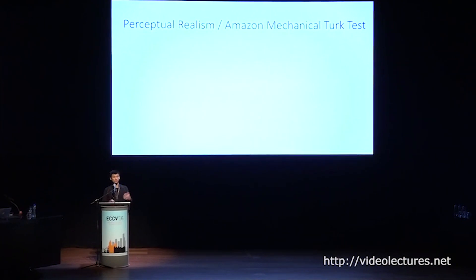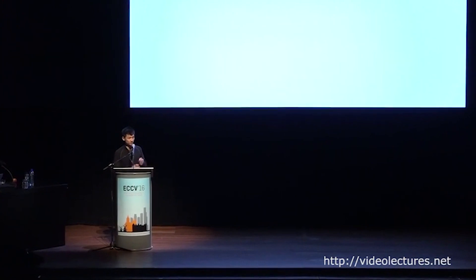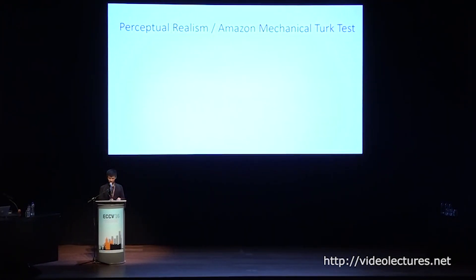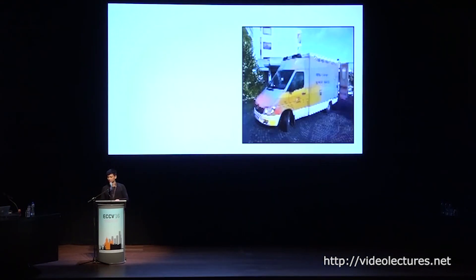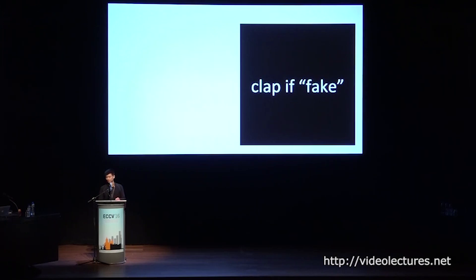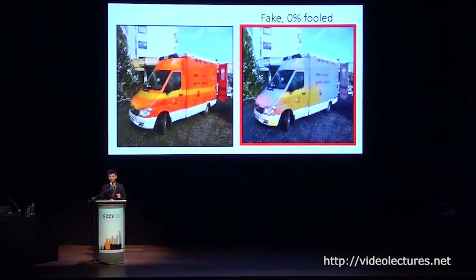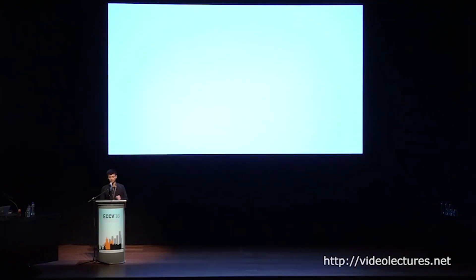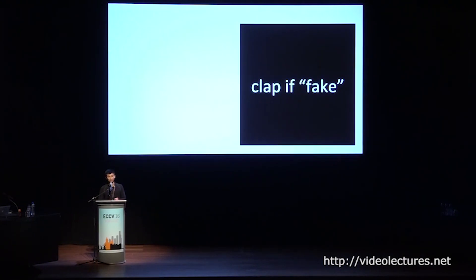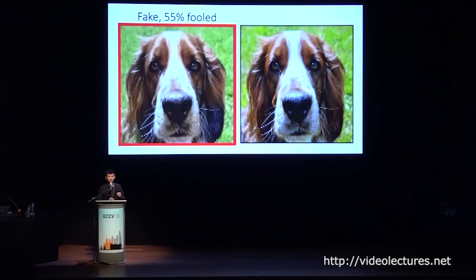We'll discuss a perceptual realism test we ran using Amazon Mechanical Turkers to provide real human judgments, and we'll invite all of you to participate in a version of this test right now. We're going to show you two images — one ground truth and one fake — and it's up to you to decide which one is fake. Image number one, and image number two. Clap if the left image is fake. Clap if the right image is fake. All of you were able to identify a very visible smudge and lack of spatial consistency on the truck — a dead giveaway on an otherwise good colorization. Let's try a case where we perform a little better. Image number one, and image number two. Clap if the left is fake. Clap if the right is fake. About 50-50 — we predicted a color very close to ground truth, so we'll fool participants at about a 50% rate.